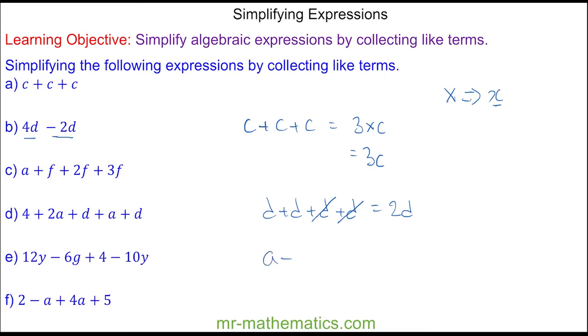For question c, we have a plus f plus 2f plus 3f. Now we're collecting like terms, and you can see that the a is not like the f, so we'll collect the f terms separately. We have one a, we have one f add another two, and add three more. In total, we have six f, so this simplifies to a plus 6f.